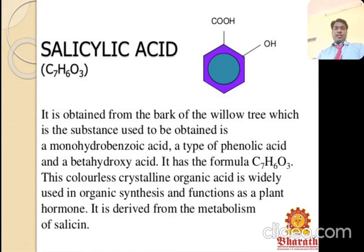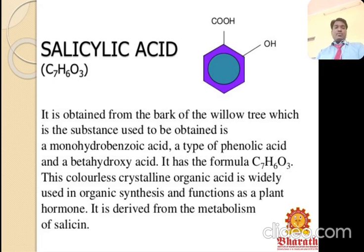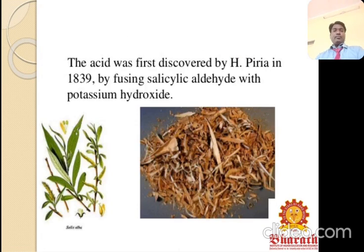Salicylic acid is obtained from the bark of the willow tree. It is a monohydroxybenzoic acid — a type of phenolic acid and beta-hydroxy acid. Its formula is C₇H₆O₃. It is used in organic synthesis and functions as a plant hormone, derived from the metabolism of salicin.